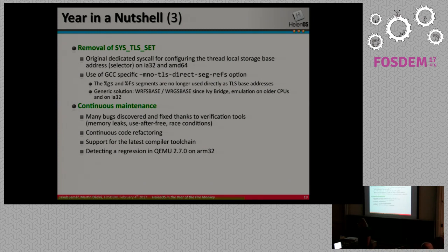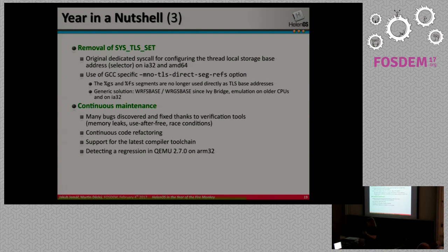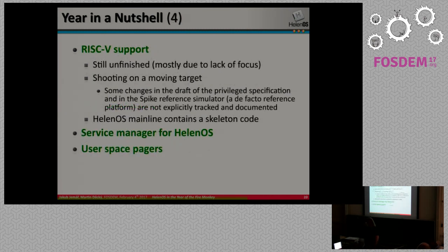We have been doing a lot of refactoring, fixed many bugs discovered by verification tools, are still on the bleeding edge of the GCC toolchain, and helped discover a regression in QEMU 2.7.0 on ARM. And then — RISC-V.